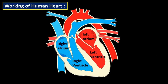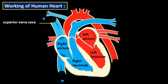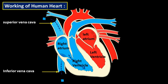Deoxygenated blood — that is, carbon dioxide-containing blood — is collected from different parts of the body into the right atrium through the vena cava. The superior vena cava collects deoxygenated blood from the upper part of the body, and the inferior vena cava collects it from the lower part. Due to the relaxation of ventricle muscles, deoxygenated blood from the right atrium enters the right ventricle through the tricuspid valve, which opens downward and has three flaps.